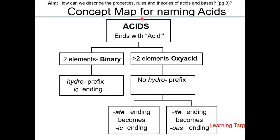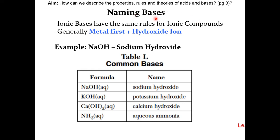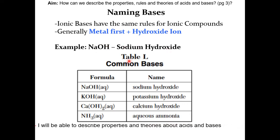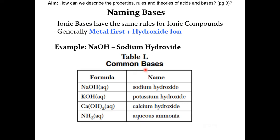Here is a concept map to summarize the rules of naming acids. For naming bases, ionic bases follow the same rules as ionic compounds — generally metal first, then the hydroxide ion. So NaOH becomes sodium hydroxide. Table L gives some examples of common bases. Keep in mind, NH3 is a covalent compound, and NH3(aq) is known as aqueous ammonia.